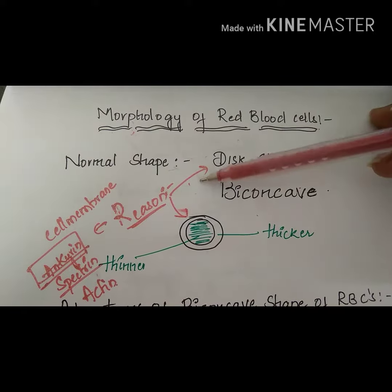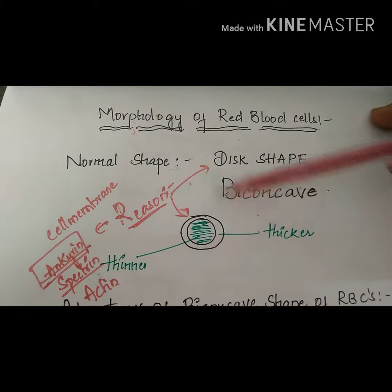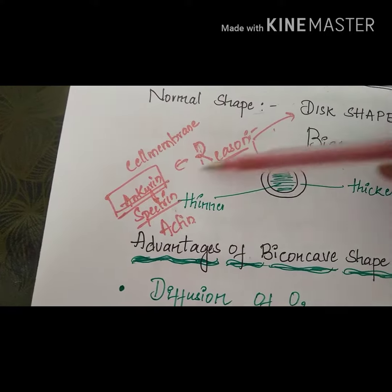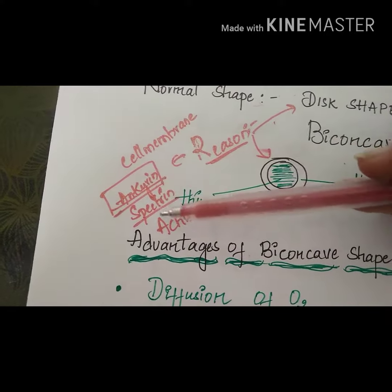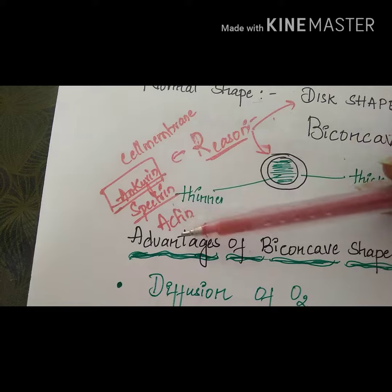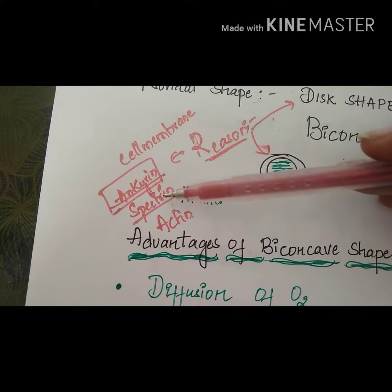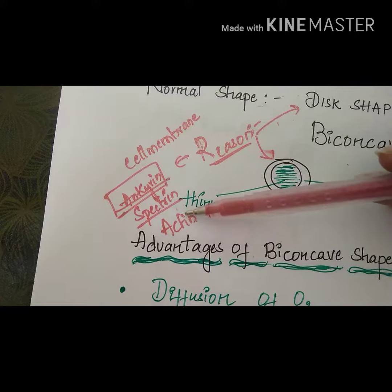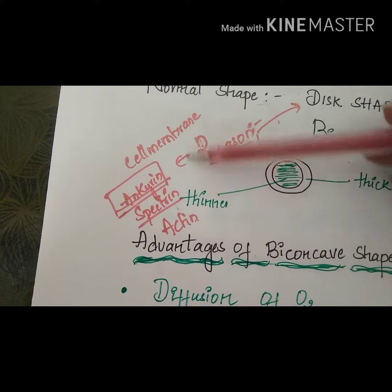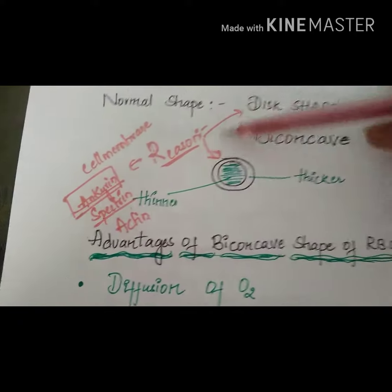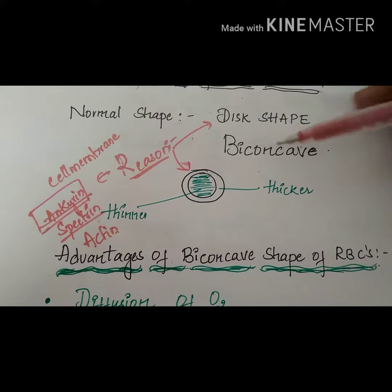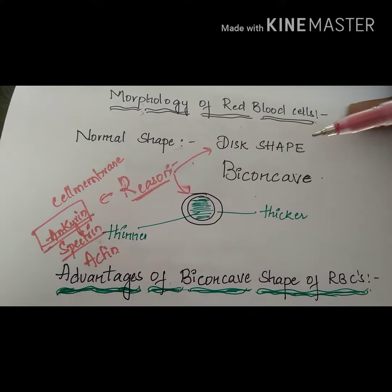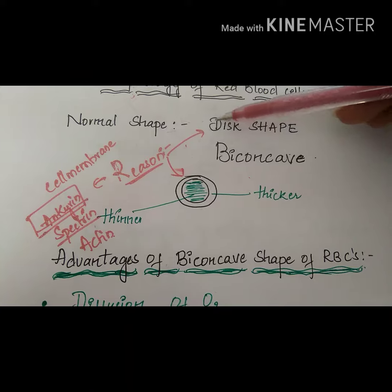The reason why RBCs are disc or biconcave shaped is that the cell membrane of the RBCs contains ankyrin, spectrin, and actin molecules. These spectrin molecules along with the ankyrin and actin molecules span through the entire RBC and give it the disc or biconcave shape.